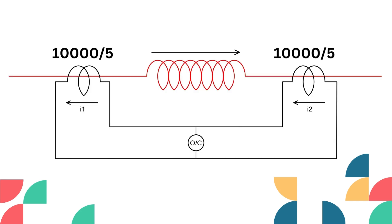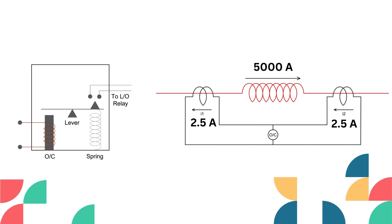Now let's understand how the electromechanical differential relay works. For a 200-megawatt generator, the CT ratio will be 10,000/5 ampere. Let us consider 5,000 ampere current flowing through the stator winding to the load. For that reason, 2.5 ampere current will flow through the secondary winding of each CT. In that case, the differential current will be 0 ampere, which is less than the set value of 0.5 ampere. This 0 ampere will not be able to activate the electromagnet and attract the plunger. The spring is designed such that only when 0.5 amperes flows through the electromagnet will it attract the plunger and make the trip contact.